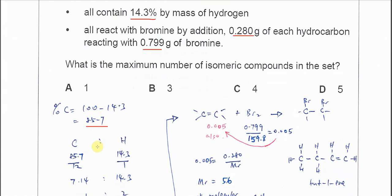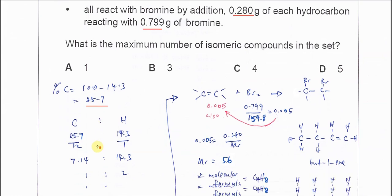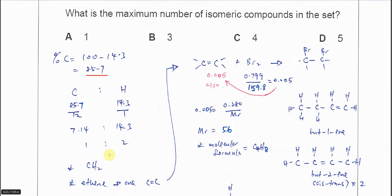Use these percentages to calculate the empirical formula. The empirical formula you should get is CH2.